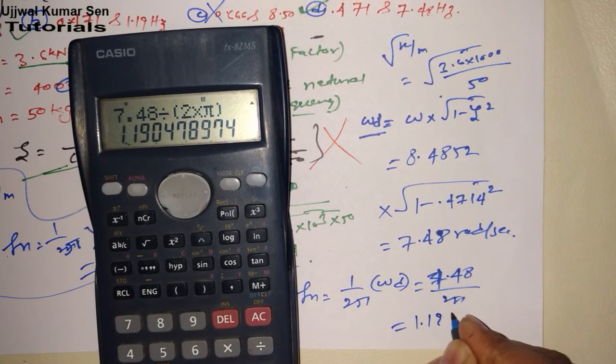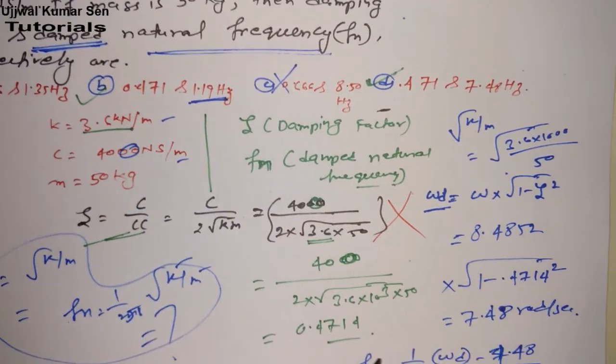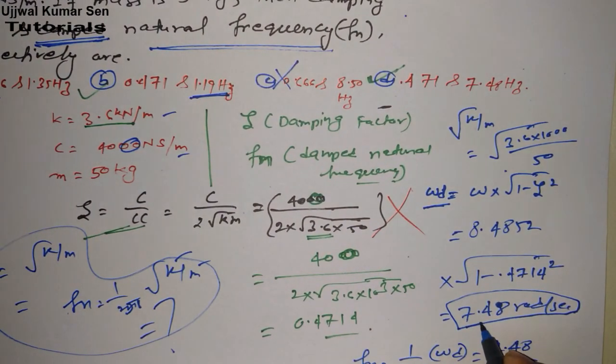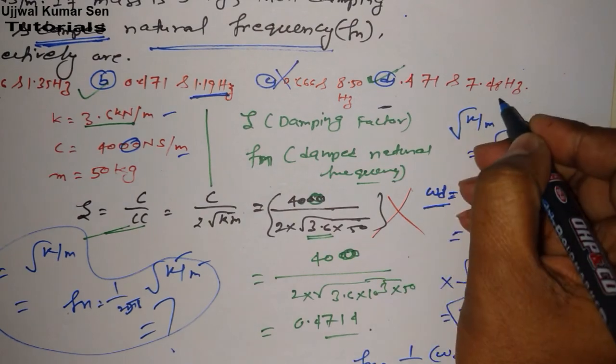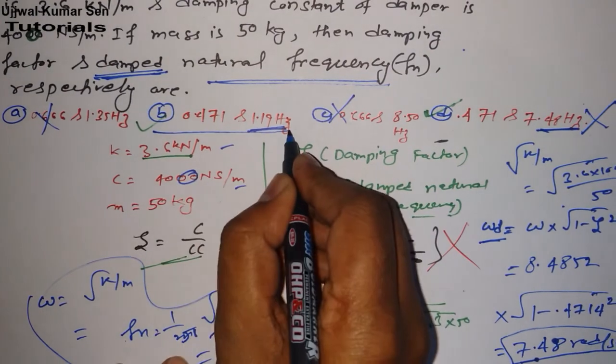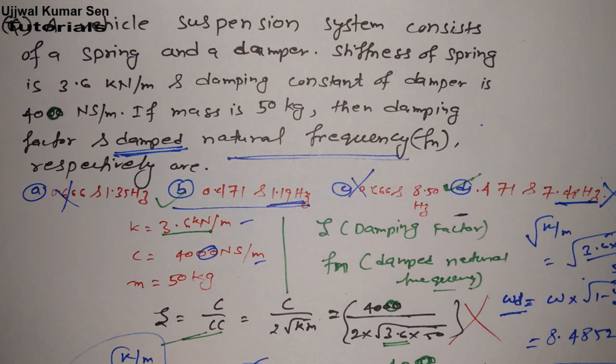1.19 hertz. Now match this value. Now you can see you will make mistake here. Because you can mark this answer right answer. But this is not a right answer. Right answer is this one. I hope you understand the concept and approach to solve numerical problems especially GATE. Thanks for watching. See you soon in my next video. Bye-bye.